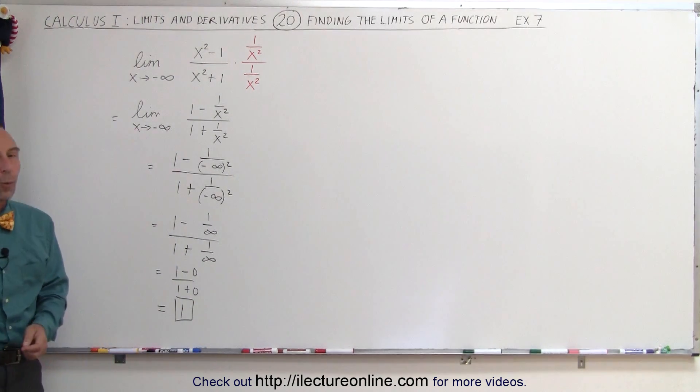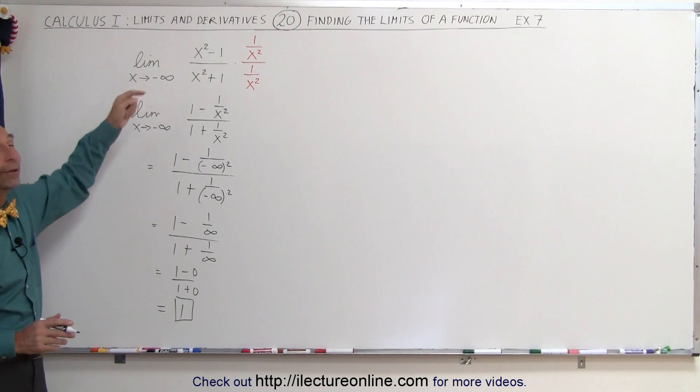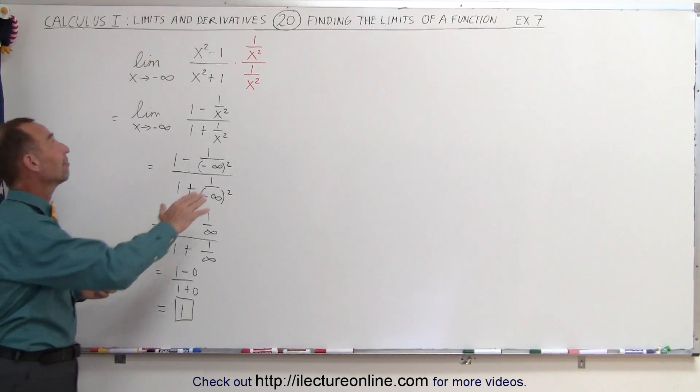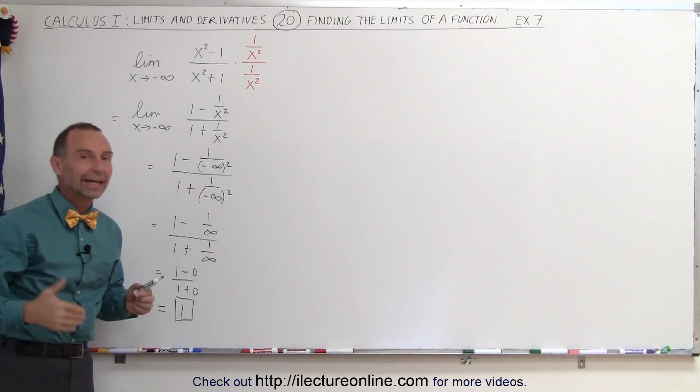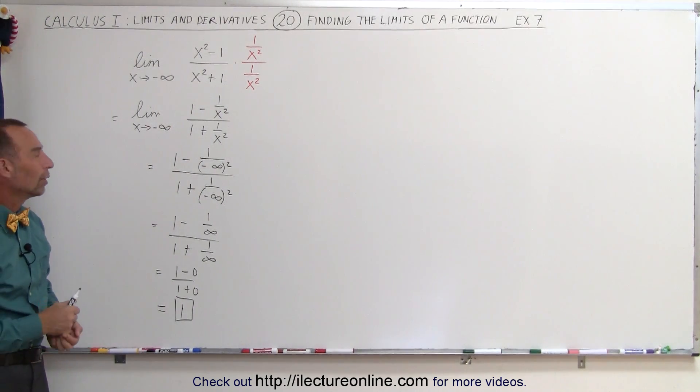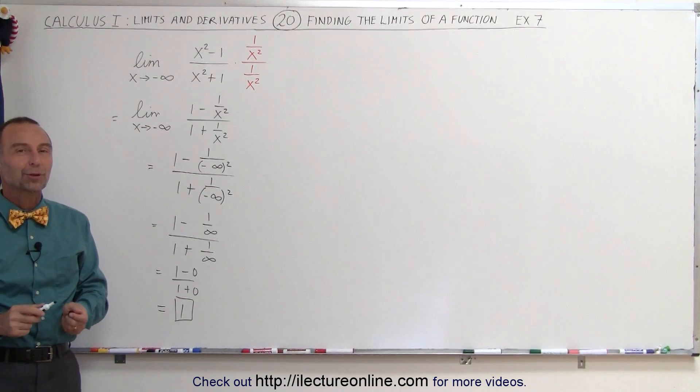And that is how you find the limit when we have limits going out to infinity or negative infinity. You cannot have the x in the numerator. You have to somehow get the x in the denominator. And then you can plug in infinity or negative infinity. That's how we do that.